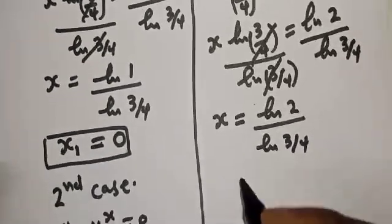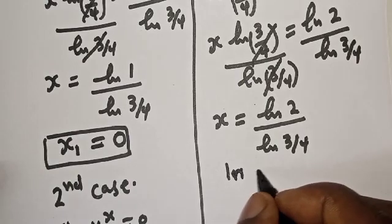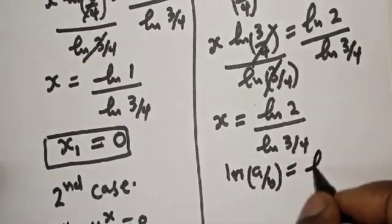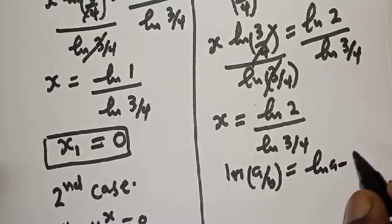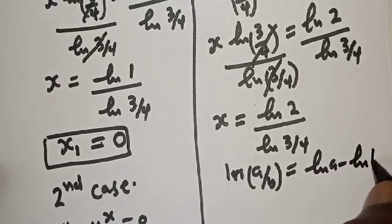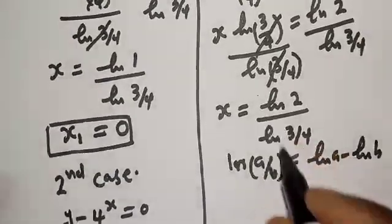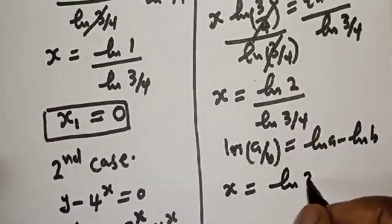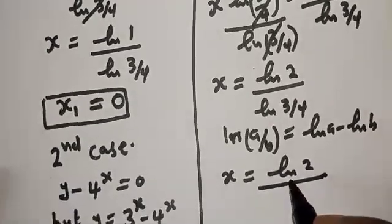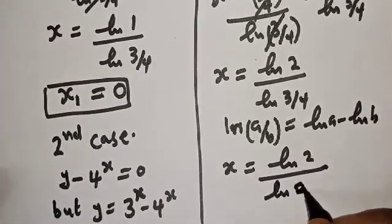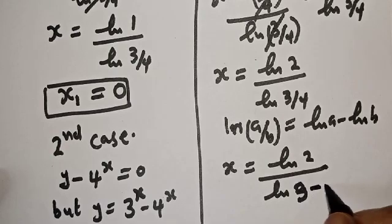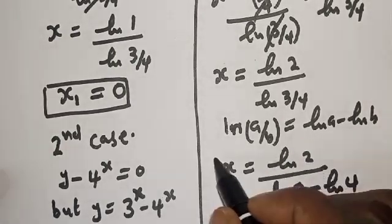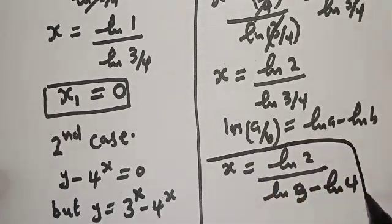Remember that natural log of a over b equals natural log of a minus natural log of b. So this becomes s equals natural log of 2 over natural log of 3 minus natural log of 4. And this is the final answer.